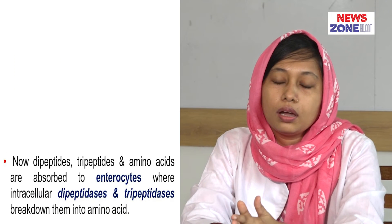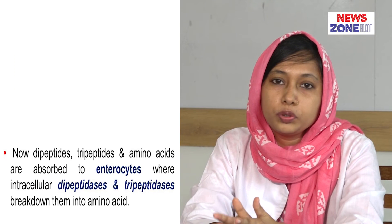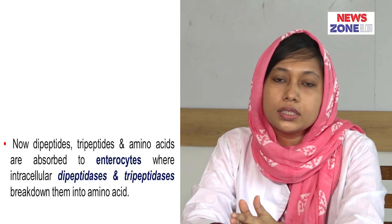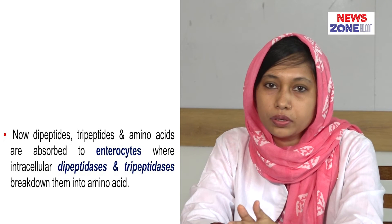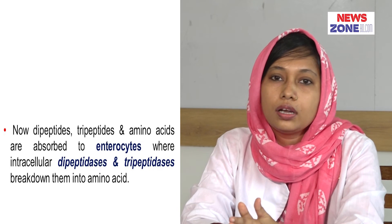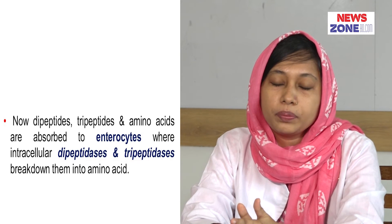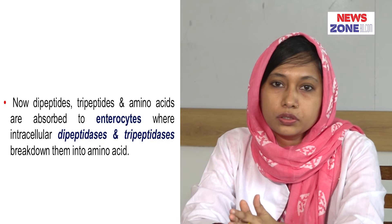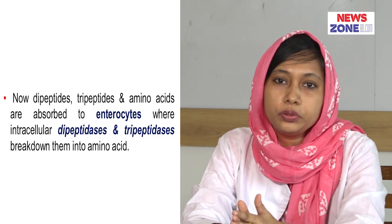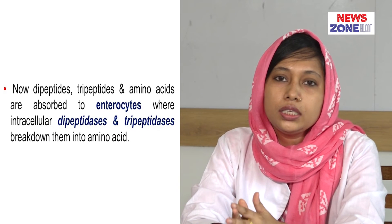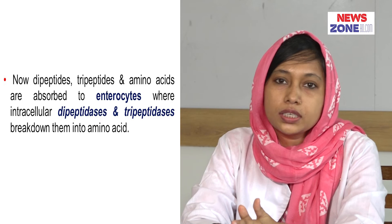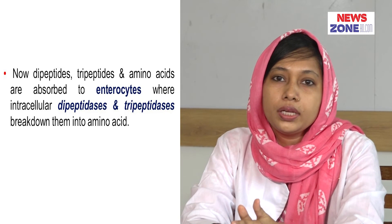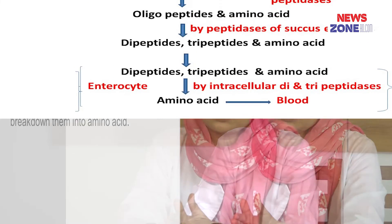In the duodenum and jejunum, intestinal juice digests this protein to make dipeptides, tripeptides, and amino acids. These dipeptides, tripeptides, and amino acids are absorbed into the enterocyte, and within the enterocyte, intracellular dipeptidases and tripeptidases convert them into amino acids.